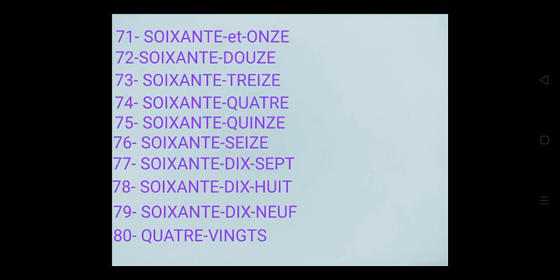71: Soixante onze. Here we combine 60, i.e. soixante, and 11, i.e. onze. So it becomes soixante onze. Similarly, combine all of them. 72: Soixante douze. 73: Soixante treize. 74: Soixante quatorze. 75: Soixante quinze.